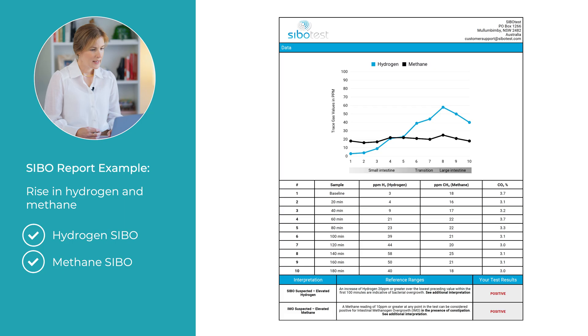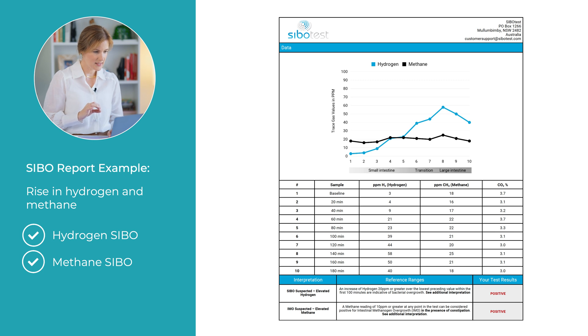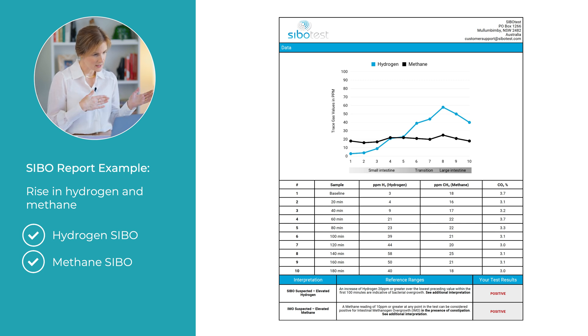Now let's look back at a lab test report and apply our guidelines to see whether we would consider this a positive or negative SIBO breath test result. As you look at the graph, you'll see a blue line representing hydrogen gas and a black line for methane gas. Normal baseline levels for hydrogen and methane in a fasted state are low, and then after ingesting the sugar solution we typically expect to see a small rise in these gases as the solution travels through your digestive system, even when there's no SIBO present. However, a significant rise is a different story. For hydrogen, we're looking for a level of 20 parts per million or more within the first 90 to 100 minutes — the idea being that hydrogen-producing bacteria ferment the sugar solution rapidly as it passes through the small intestine.